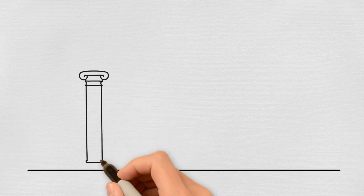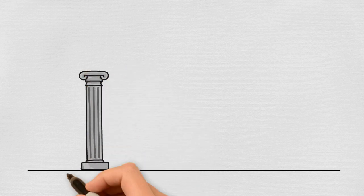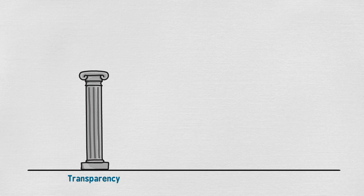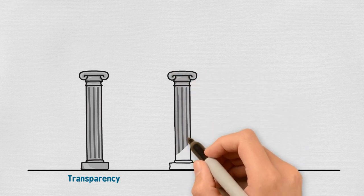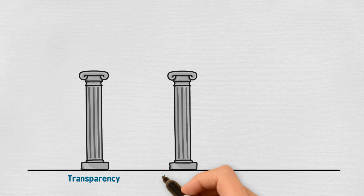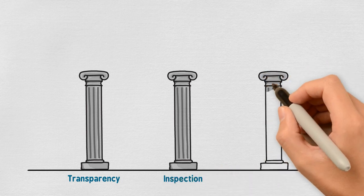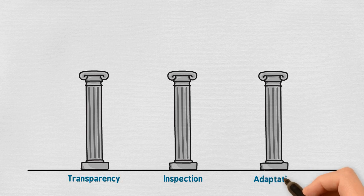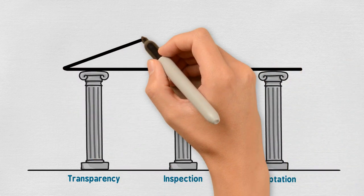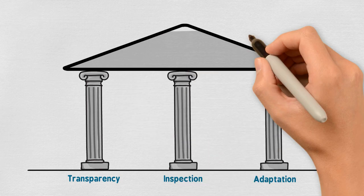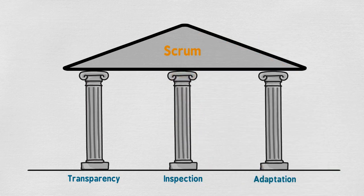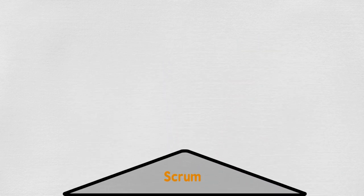Scrum is based on three pillars. First, Transparency — all of the team knows where we are going and what is happening in the project or product. Second, Inspection — we ensure the work quality while we are doing it. Third, Adaptation — one of the most important Agile criteria to show flexibility and change direction and strategy in order to achieve better value for our customer.